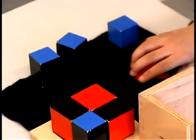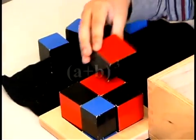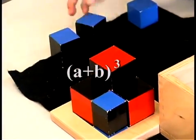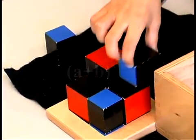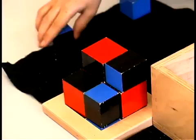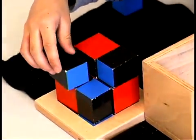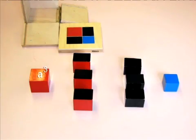The binomial cube proves the binomial equation A plus B cubed. When the cube is reassembled, the size and color coding provide a control of error for the child. The largest cube is defined as A cubed, and the smallest cube is B cubed. From this assumption, many algebraic relationships can be derived in the elementary years.